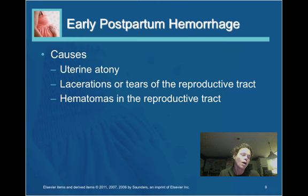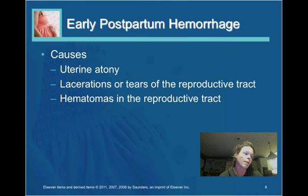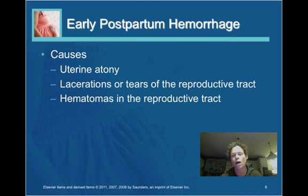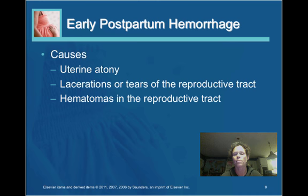Remember that lacerations can occur during delivery, and you want to assess for that. Blood loss from a laceration is usually bright red because it's fresh and will look different from lochia, which is usually darker. A laceration produces a fairly consistent trickle of blood, as opposed to lochia which comes in fits and spurts. Hematomas are collections of blood in a certain area — similar to hitting your leg and developing a bruise on your shin.